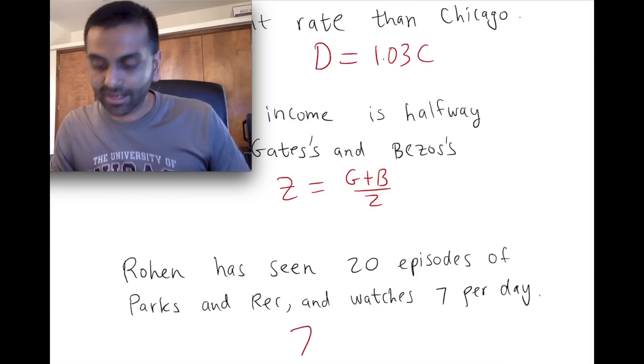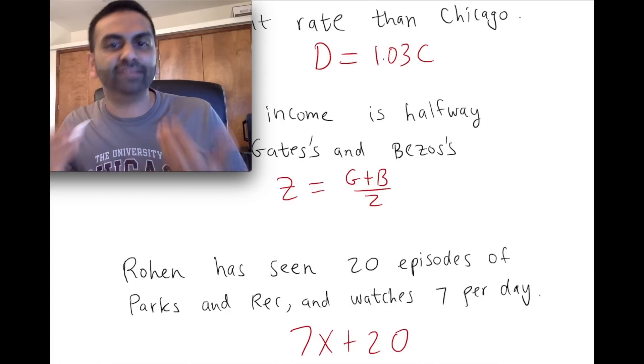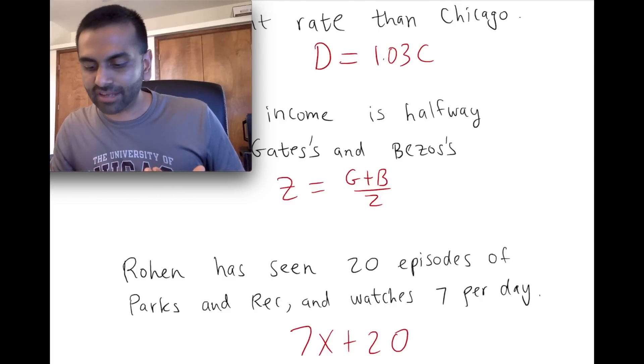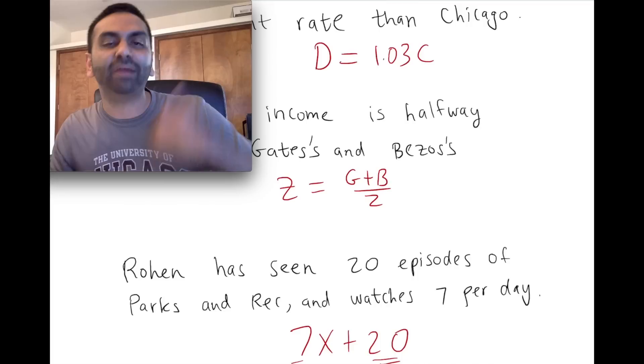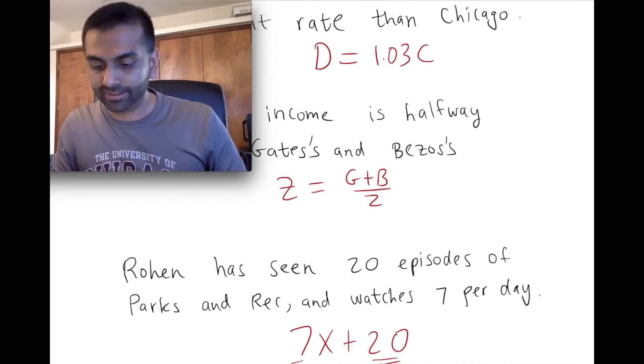So seven, you're starting with 20, so there you go. So 7x plus 20. That line, that mx plus b, represents anything—it starts off at 20 and increases by seven each period.